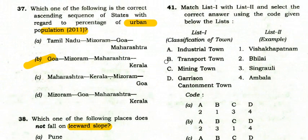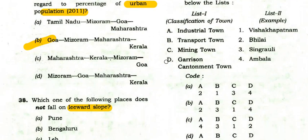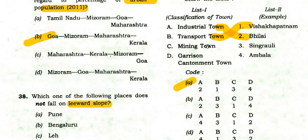Match List 1 with List 2 on classification of towns with examples. The right answer is A: industrial town — Bhilai; transport town — Visakhapatnam; mining town — Singrauli; garrison/cantonment town — Ambala.